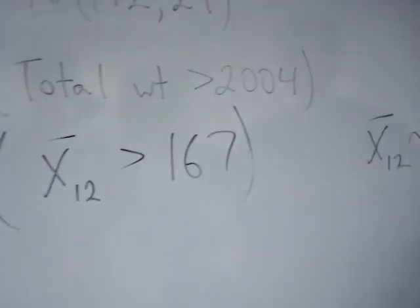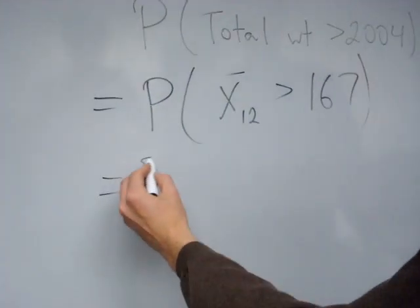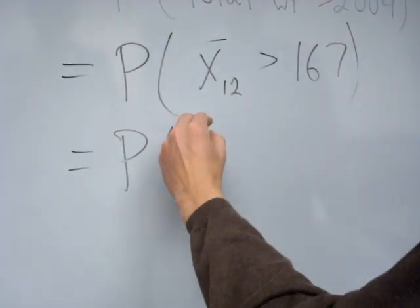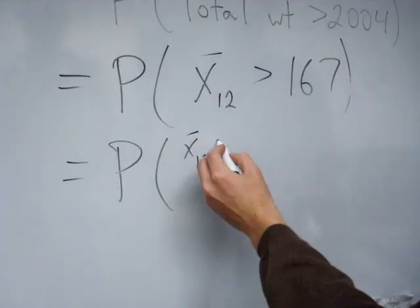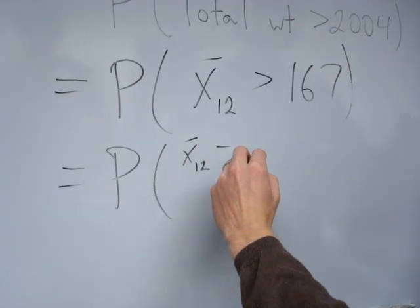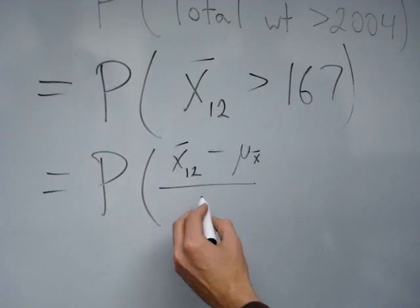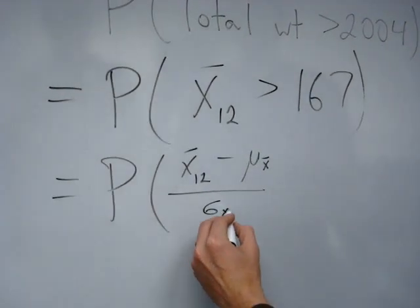So now we just want to find the probability that x-bar 12 is greater than or equal to 167. And to do that, we would standardize. So the probability that x-bar 12, we'll just go ahead and subtract the mean, which is mu x-bar. I'll go ahead and write the number in, and divide by sigma x-bar.